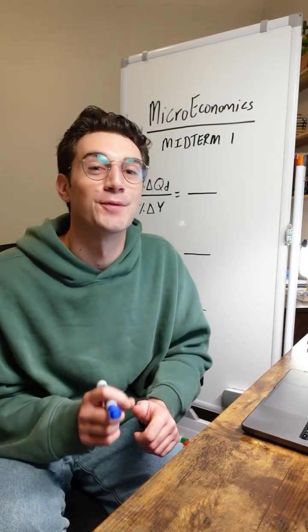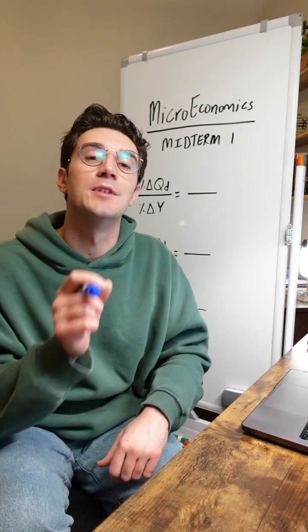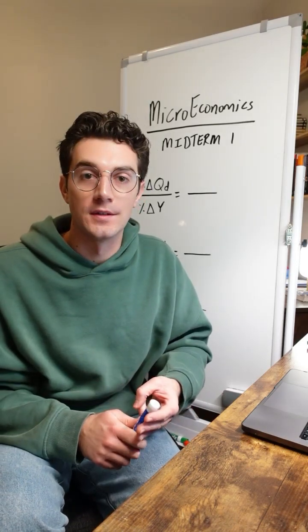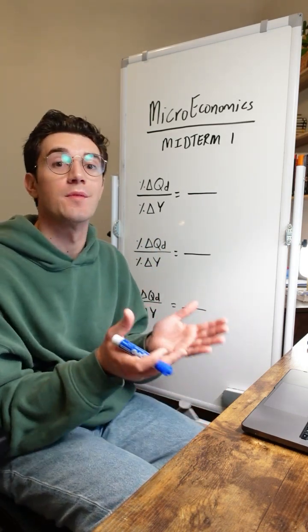If you're in your first microeconomics class and screwed for your next midterm, there are three different types of goods you need to be aware of when it comes to income elasticity of demand: inferior, necessities, and luxury goods. And this is how we use the income elasticity of demand formula to determine which type of good we're working with.